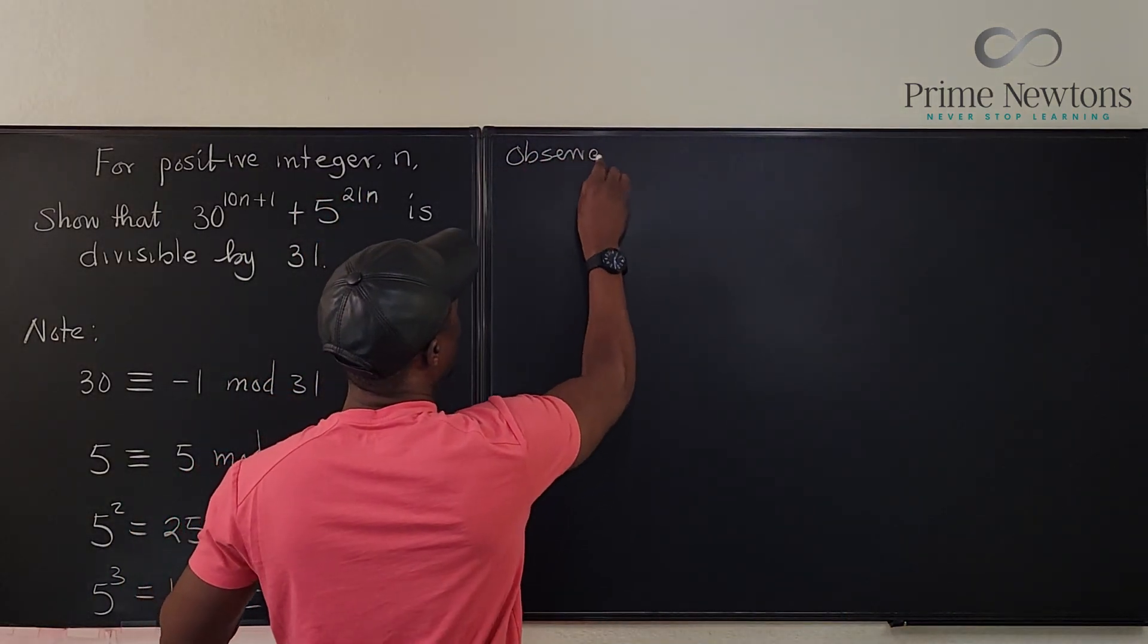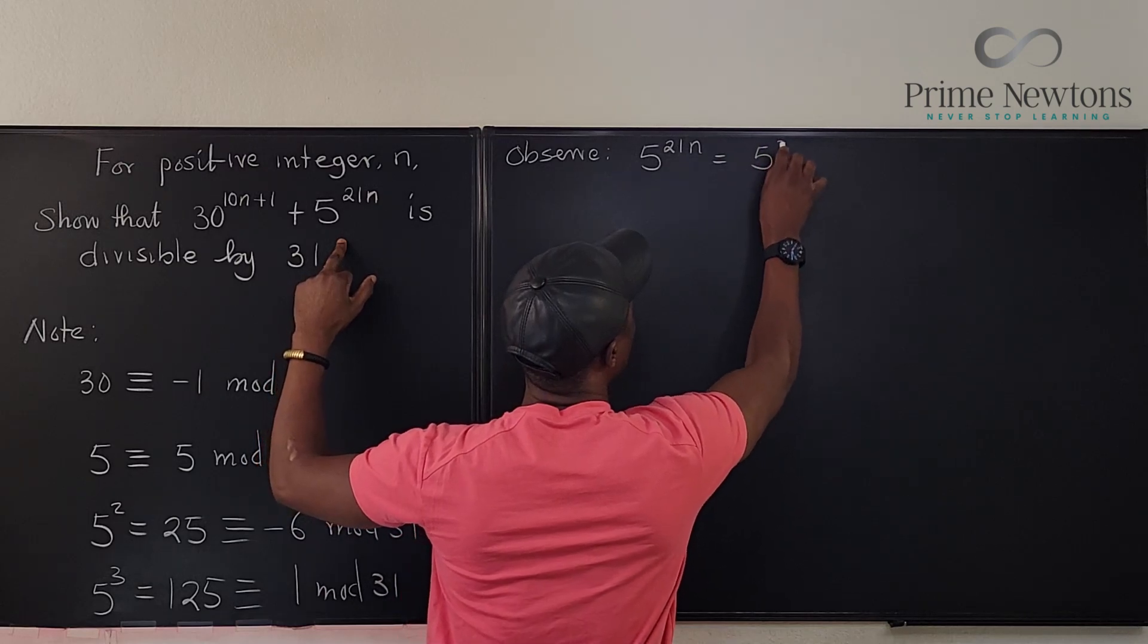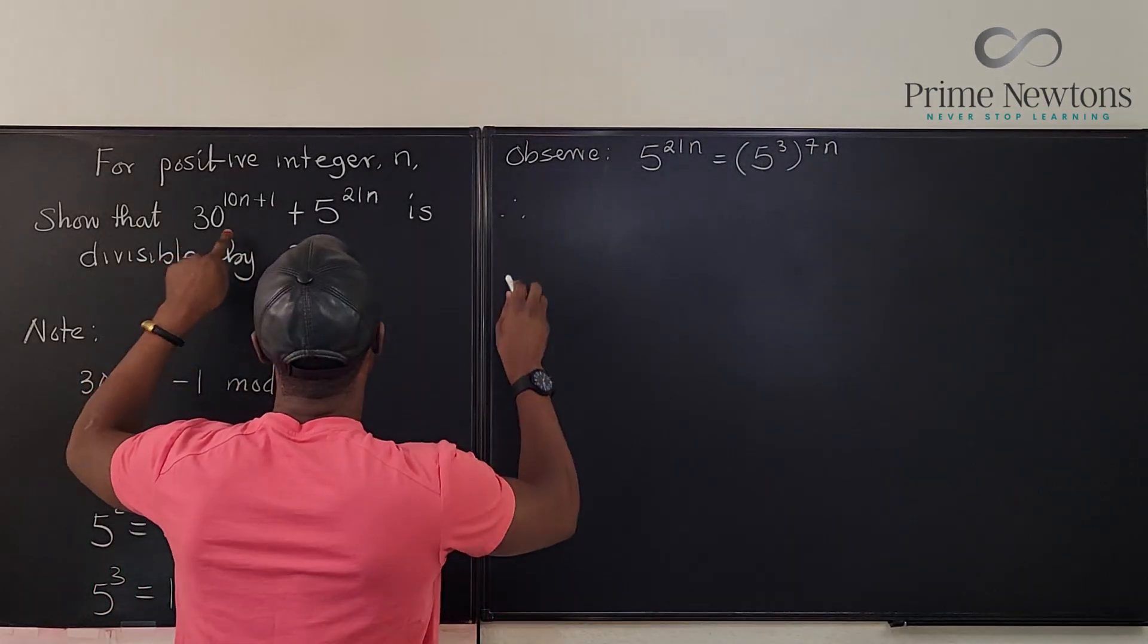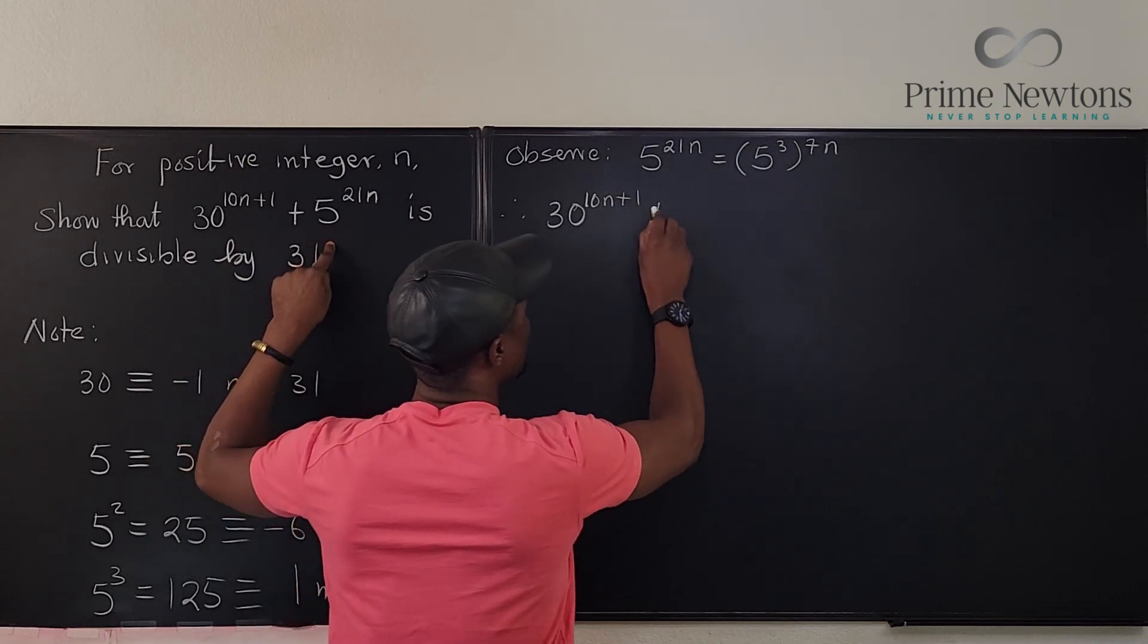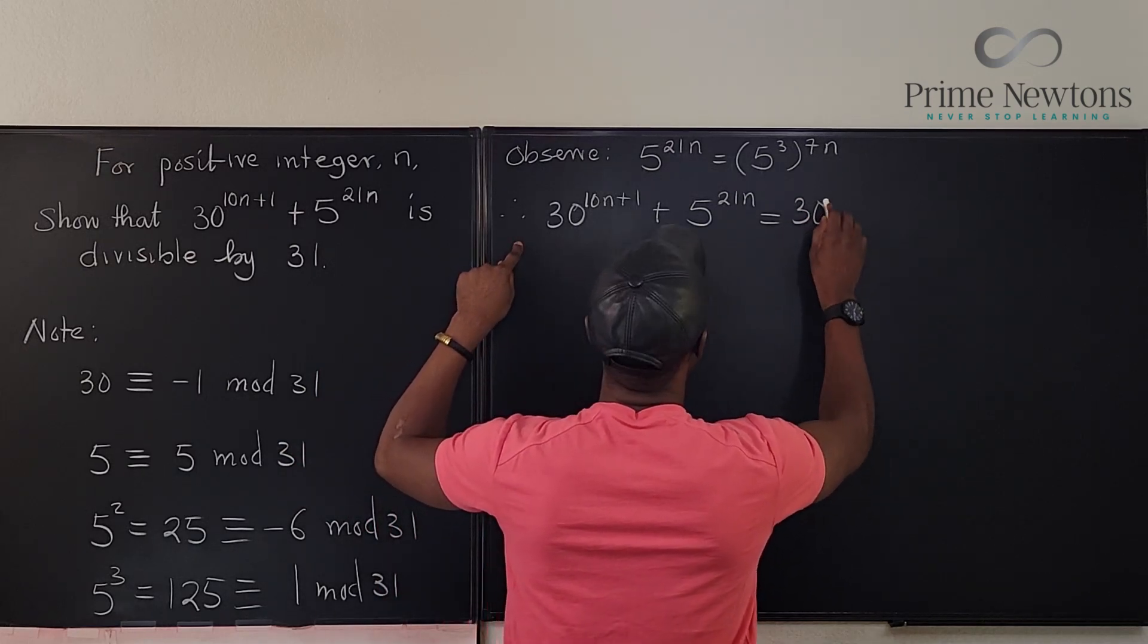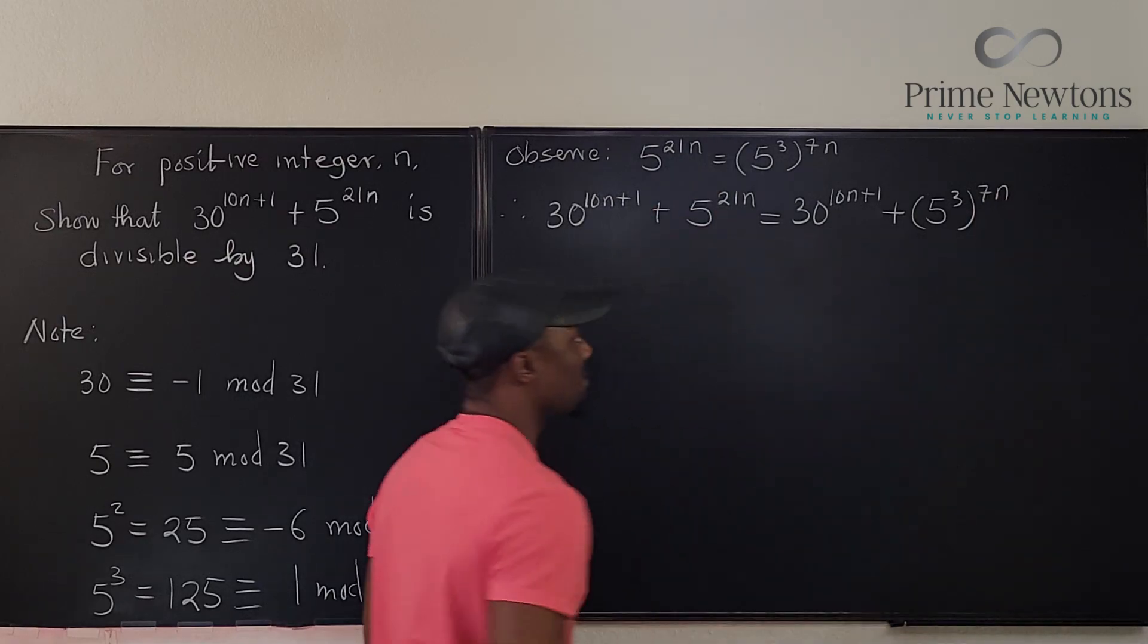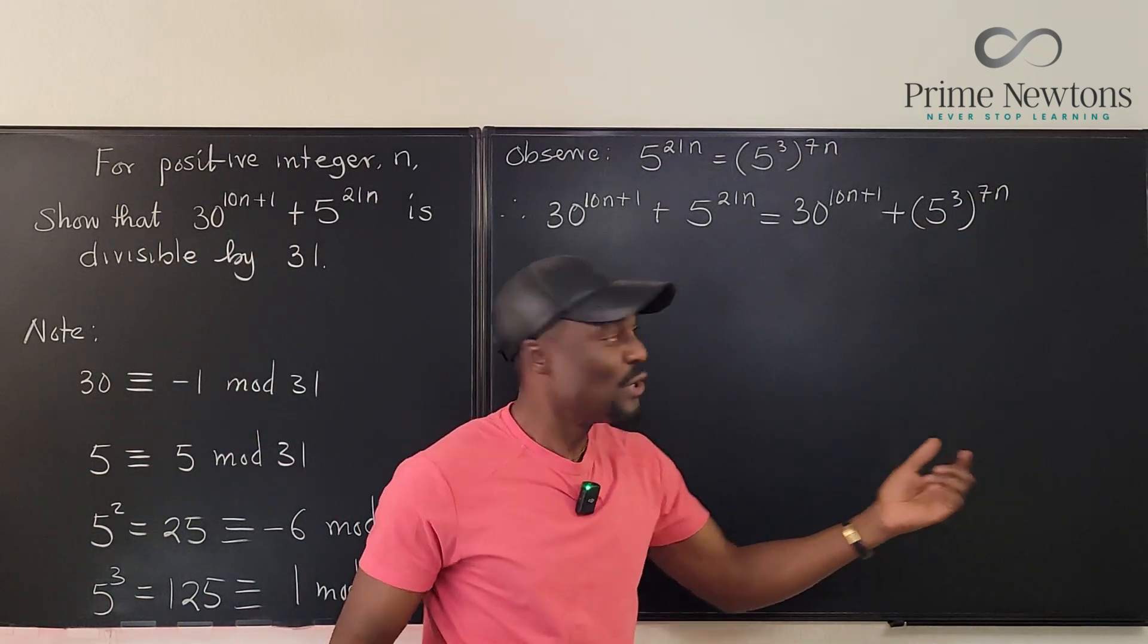Observe that 5^(21n) can be written as (5^3)^(7n). Do you see that? So that means we can write this as 30^(10n+1) + 5^(21n) is the same thing as 30^(10n+1) + (5^3)^(7n). Yeah, because this is still 21n, right? The power.